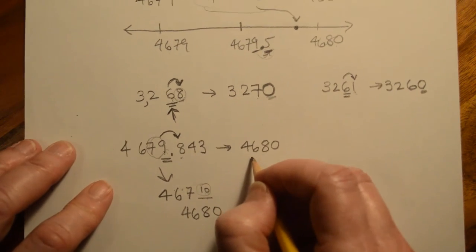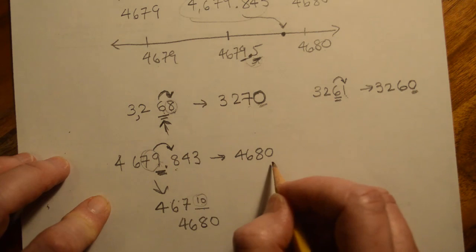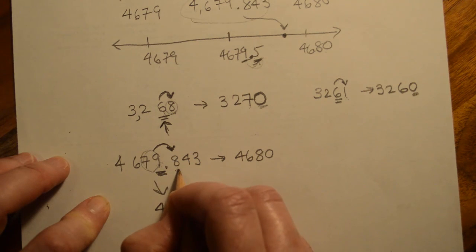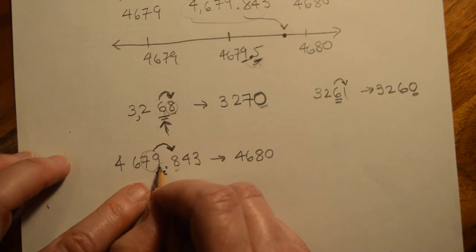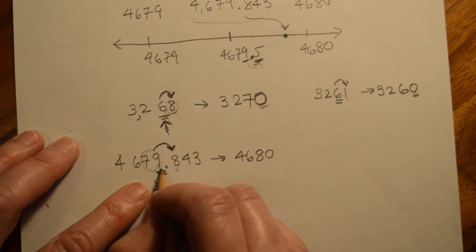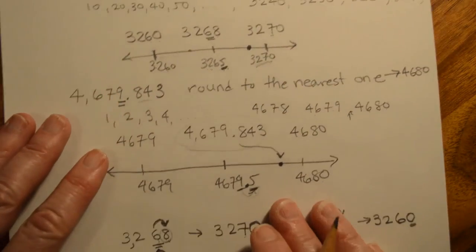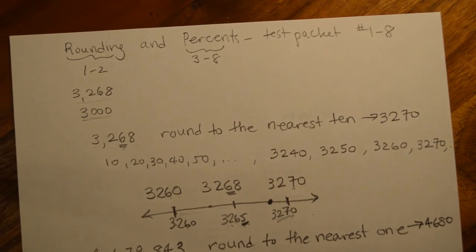So the whole idea here is look at the place that you're rounding to, look at the next door neighbor. Has it made it to the halfway point? If it has, then you're going to bump this one up one more. If it hasn't, then you're going to leave this one the same. I'm going to do a second video on percents because I feel like this one's gotten long enough already. So I'll give you a second link for that one.